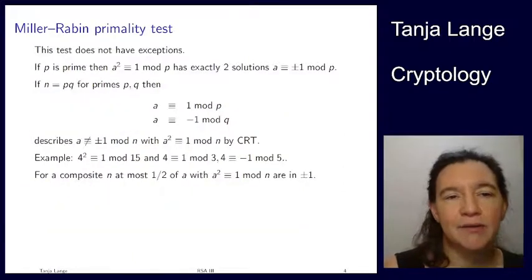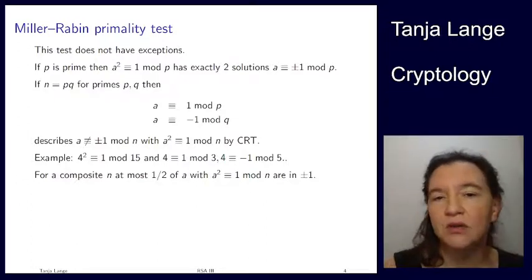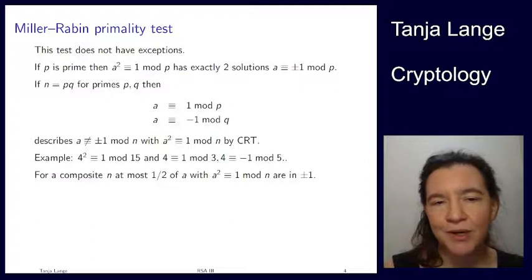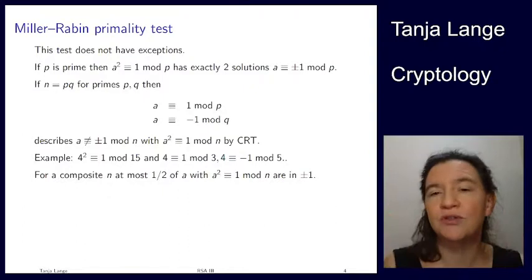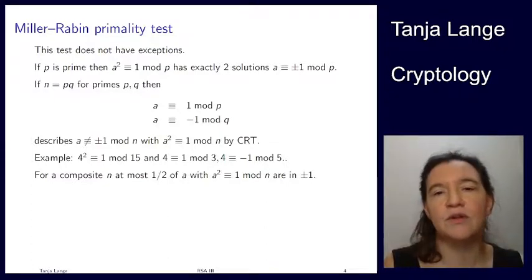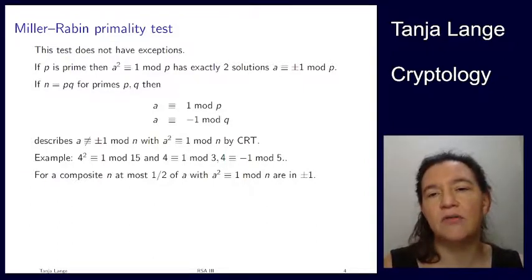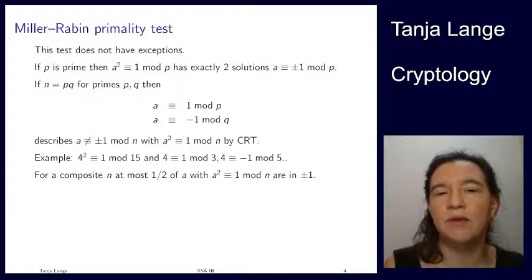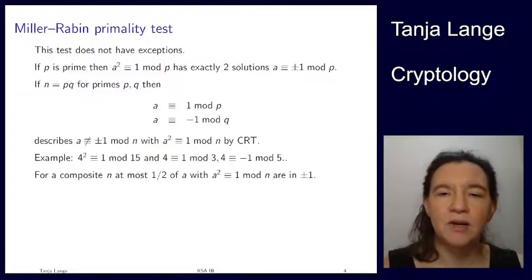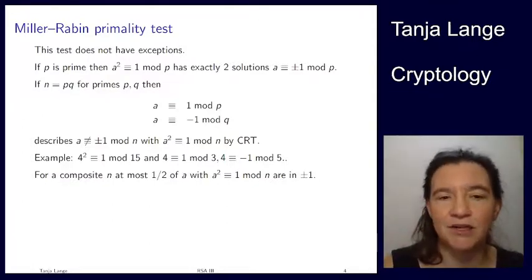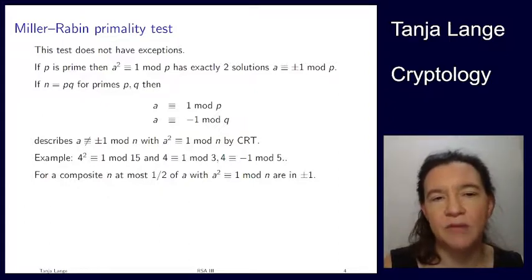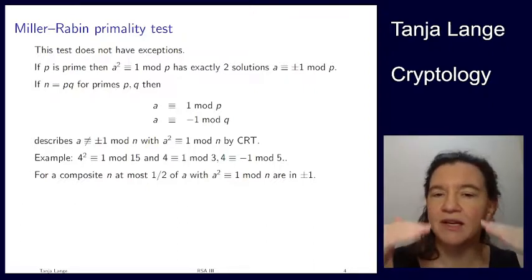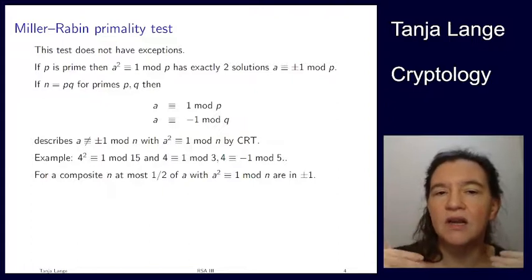What I actually want to go through is the Miller-Rabin primality test, which does not have these exceptions — so that's a good motivation to pay attention. Here's another key property: if p is prime, then the equation a squared ≡ 1 mod p has exactly two solutions, namely plus or minus 1. You can prove this using the fact that for polynomials over a field, the number of roots equals the degree. So x squared minus 1 mod p, having degree 2, has exactly 2 solutions: plus and minus 1.